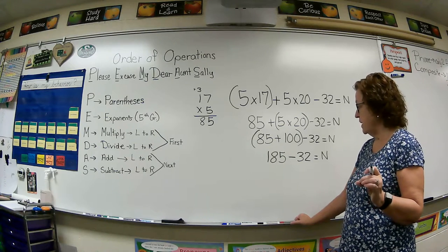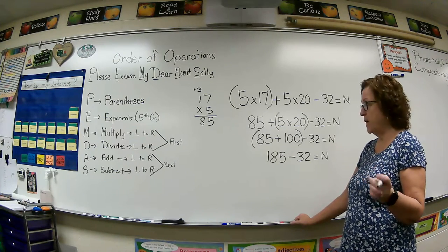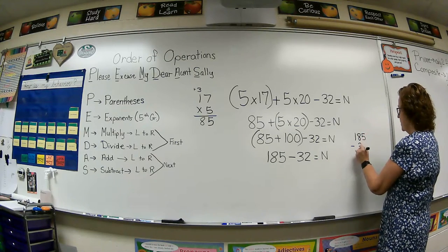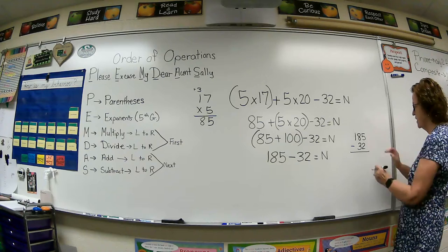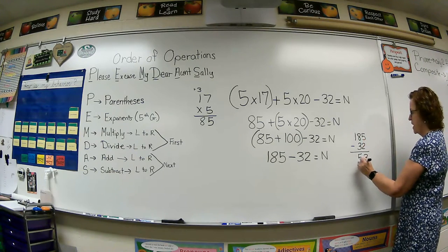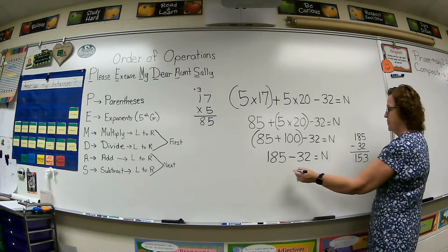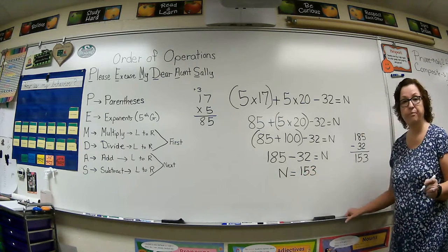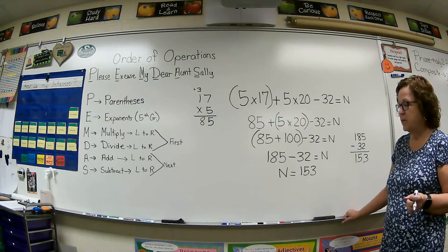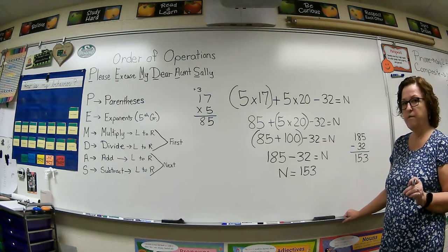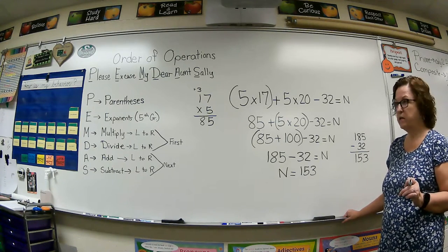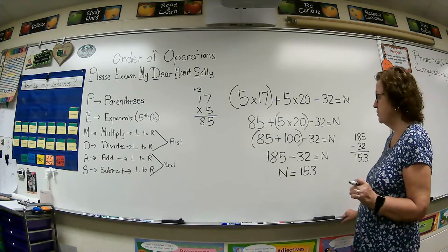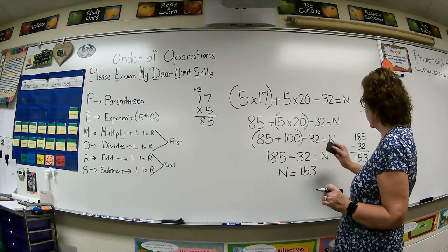And we finally got it down to one thing to do to calculate our answer. And so we're going to do 185 minus 32. Now if you can't do that in your head, that's fine. Just go over to the side, write it down vertically, and figure it out. 5 minus 2 is 3. 8 minus 3 is 5. Bring down your 1. Final answer, N equals 153. Now, it's important to follow the order of operations. What if I had not followed the order of operations? Would I have gotten the answer 153?